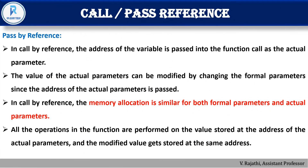Next we discuss pass by reference. In call by reference, the address of the variable is passed into the function call as the actual parameter. The value of the actual parameter can be modified by changing the formal parameter. Since the address is passed, the memory allocation is the same for both formal and actual arguments — unlike call by value where memory allocation is different.